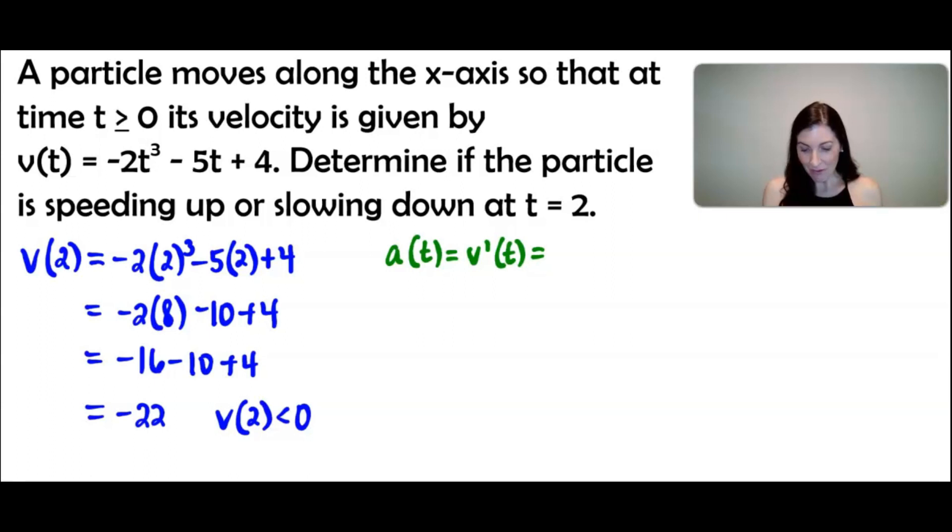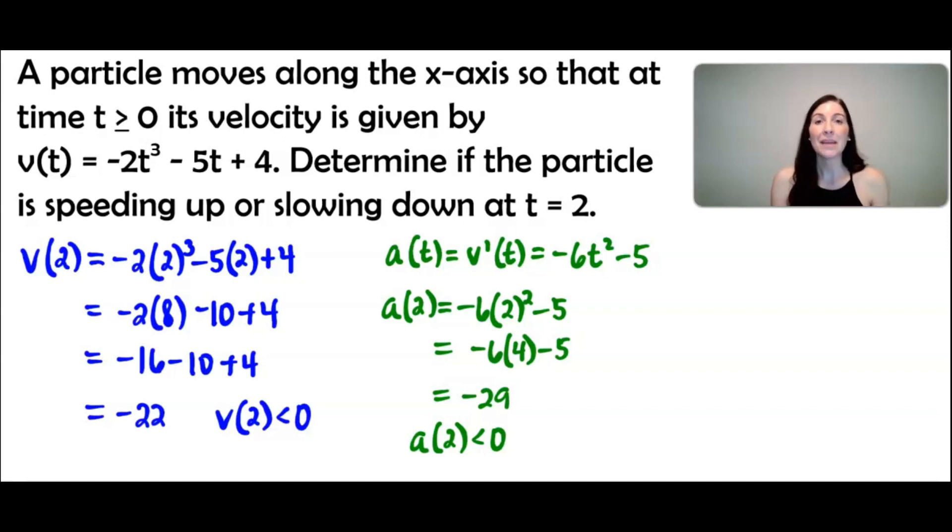So the derivative of velocity is going to be negative 6t² minus 5, and now we need to see what is the sign of acceleration at the time of 2. So for that we need to find a of 2, which will be negative 6 times 2 squared minus 5, or negative 6 times 4 minus 5, which would be negative 24 minus 5, or negative 29. So it looks like a of 2 is also less than 0 or a negative number. That means the object, or in this case the particle, is accelerating to the left because the acceleration is negative.